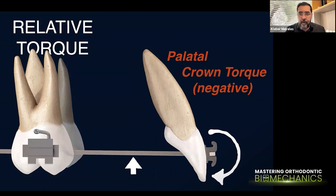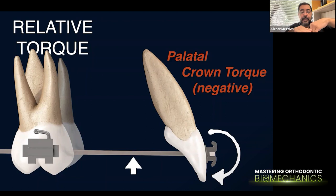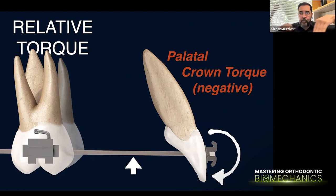With neutral real torque in this case, we get a relative negative crown torque. In the first example, neutral remained passive because the inclination was correct and the relationship between the torsion of the wire matched the inclination of the slot, so no active relationship was generated. In the second example, we have an active relationship.